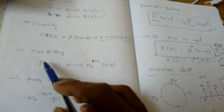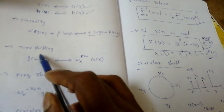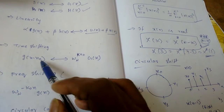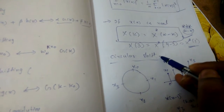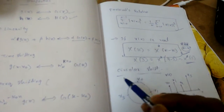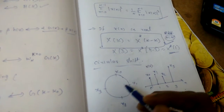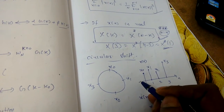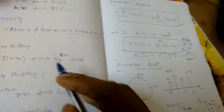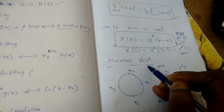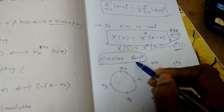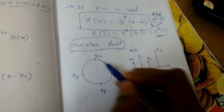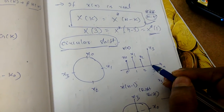In DFT, time shifting is not ordinary linear shifting — it is circular shifting. Because we have only a finite sequence, we must not lose any information. So in DFT we only do circular shifting. For example, suppose x(n) = {X₀, X₁, X₂, X₃}.